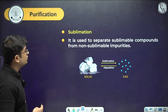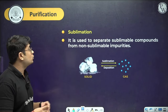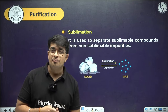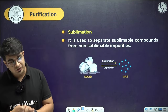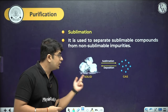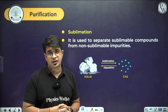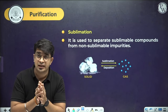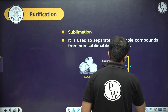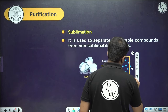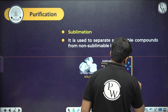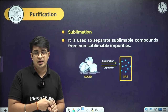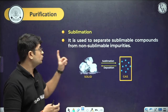Sublimation is used to separate sublimable compounds from non-sublimable impurities — either the impurities or the organic compound must be sublimable. The solid is converted to gaseous state; impurities remain in the solid state while the vapors are collected and condensed, allowing the organic compound to be recovered. The key property: either the impurities or the organic compound must be sublimable for this technique to work.